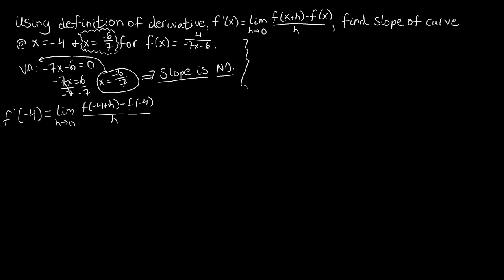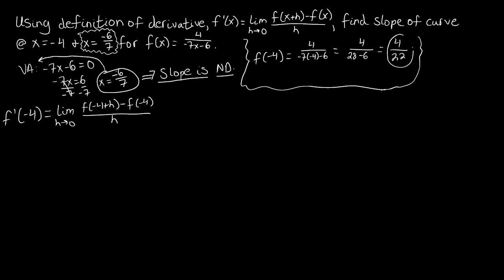Let's do some scratch work. f of negative 4 is 4 over negative 7 times negative 4 minus 6, which gives us 4 over 28 minus 6, or 4 over 22. So plugging in, we have the limit as h approaches 0 of 4 over negative 7 times negative 4 plus h minus 6, minus 4 over 22, all over h.